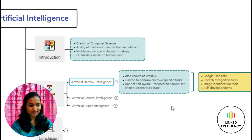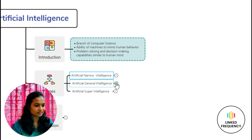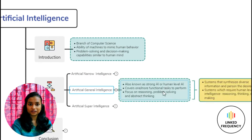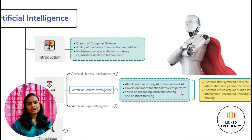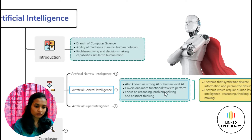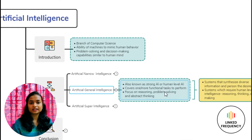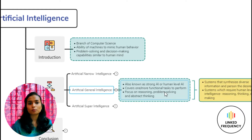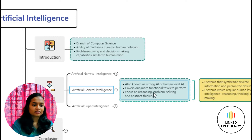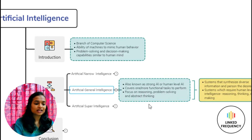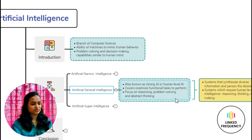Now let's move on to the next stage: Artificial General Intelligence, also known as AGI, and also called Strong AI or Human Level AI. It is called Human Level AI because it can cover one or more functional areas to perform a task — for example reasoning, thinking, decision making, or problem solving. It can club two or more specific tasks in a go and perform the operation. It focuses on reasoning, problem solving, and abstract thinking, which is very much similar to human behavior.